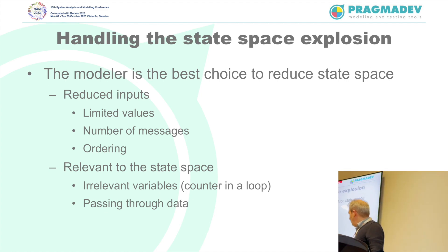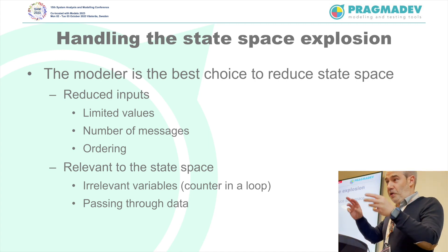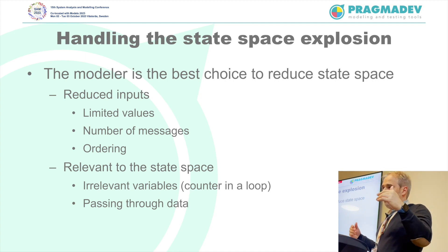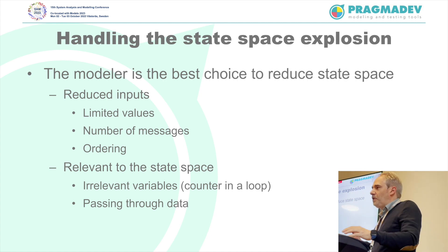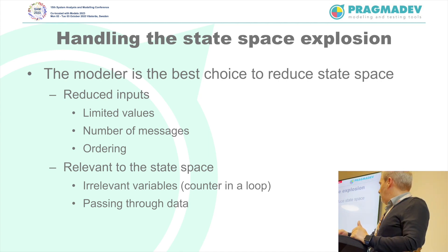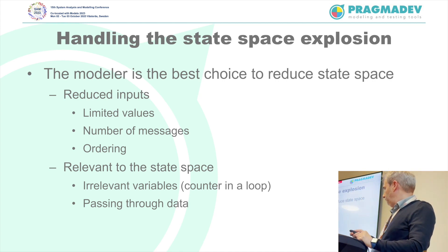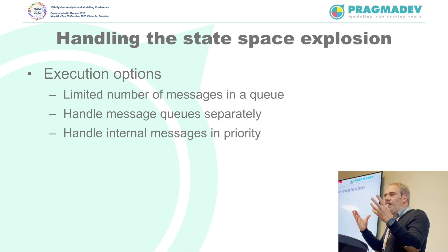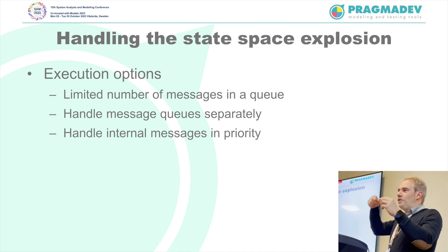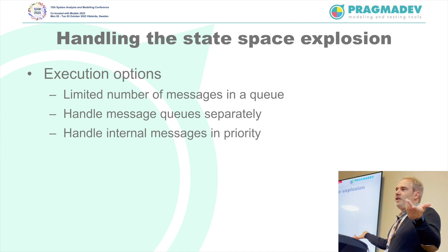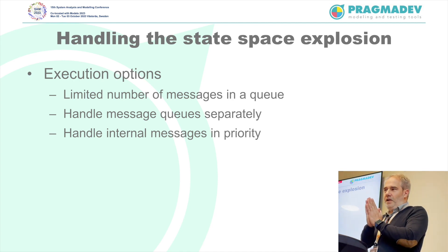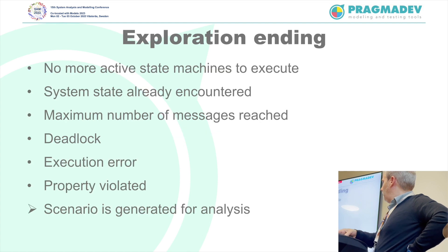We also handle what we call irrelevant variables within the model — not in the incoming messages, but inside the model itself. For example, a counter in a loop: at the end of the loop the counter has a different value, but it doesn't really matter for the overall state. You can configure and mark these as not relevant. Another thing is limiting the number of messages in the queues — you can add messages to a queue forever and get a different state each time, but it's not really interesting. You can also give priority to internal model messages over external ones.